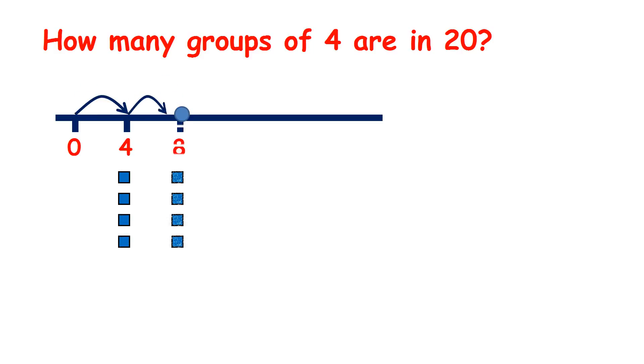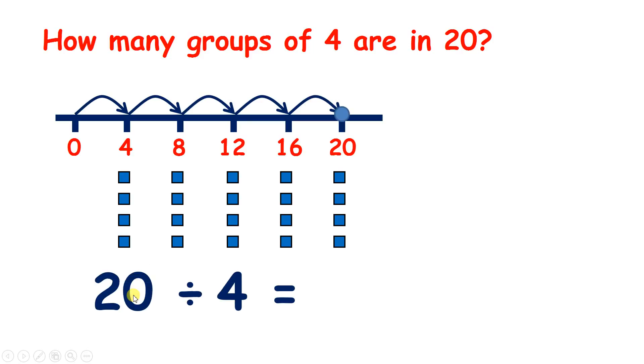4, 8, 12, 16, 20. So what we've done here is divide 20 by 4, and we've made 5 groups, so our answer is 5.